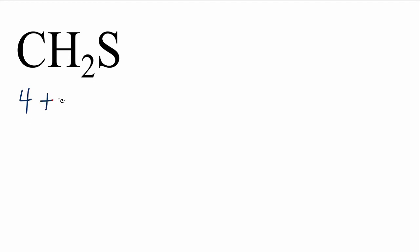Carbon has four. Hydrogen has one. We have two hydrogens, so we'll multiply that by two plus sulfur. That has six for a total of 12 valence electrons for the CH2S Lewis structure.